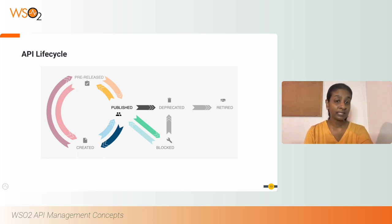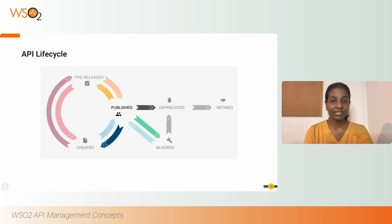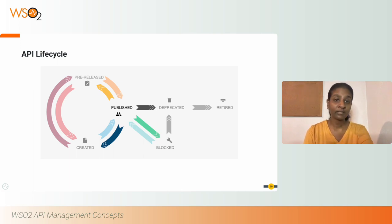WSO2 API Manager has a set of predefined lifecycle states: created, pre-released, published, blocked, deprecated, and retired. You can even add your own lifecycle state through the extension points provided. The created state is where the API has been created but is not available for usage — external users cannot see these APIs. The pre-released state is where your API is not yet released but is available to external users or consumers to test, giving an early implementation of the API.